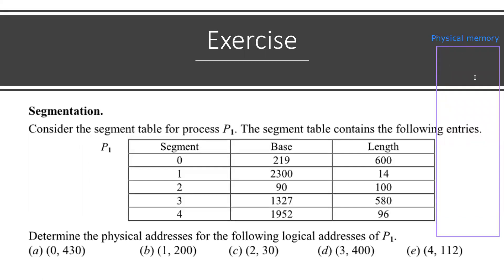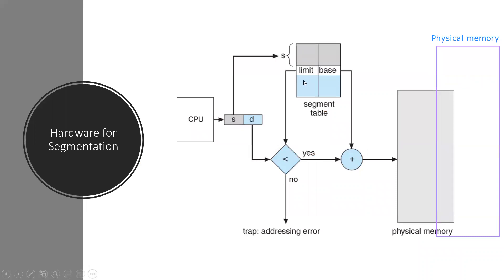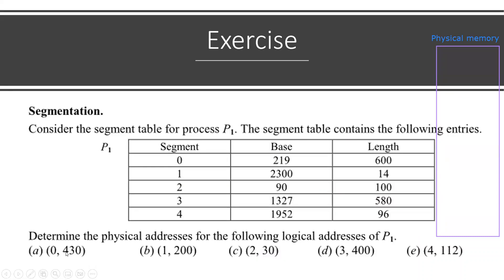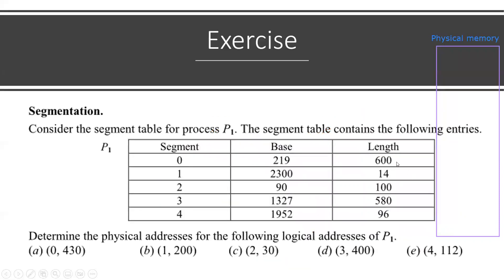If we talk about segment 0, logical address is 430 and the limit is 600. Recall this diagram — logical address must be less than limit. Logical address 430 and segment 0 length or limit is 600. Since 430 is less than 600, the condition is satisfied, so the physical address is possible to assign.